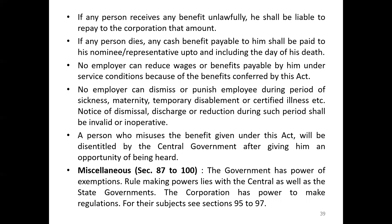The miscellaneous chapter covers sections 87 to 100. The government has the power of exemptions. Rule-making power lies with both the central and state governments, and the corporation has power to make regulations — particularly sections 95 to 97, which relate to the power to make regulations.